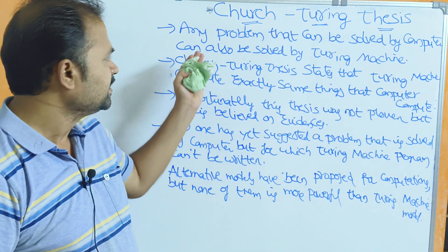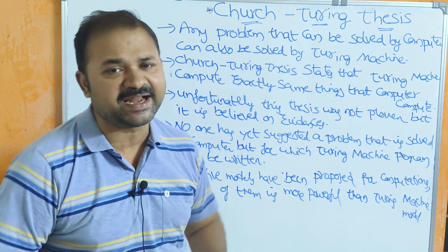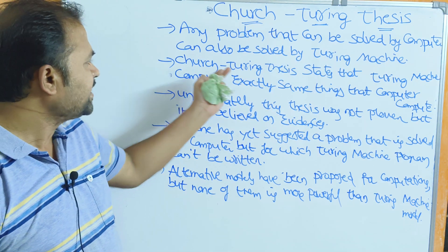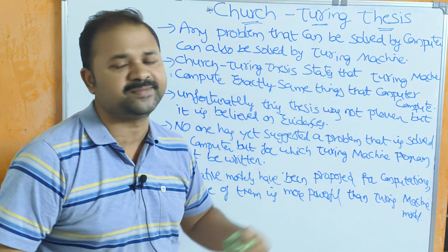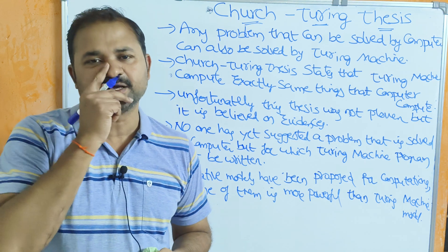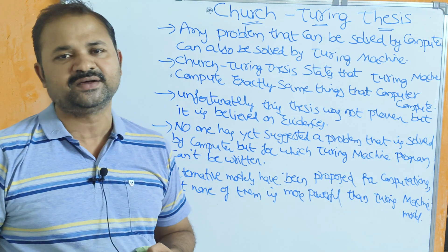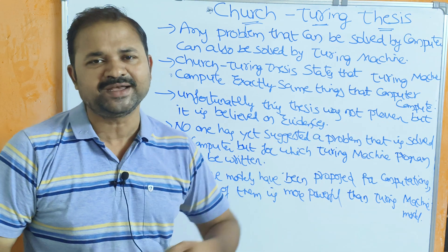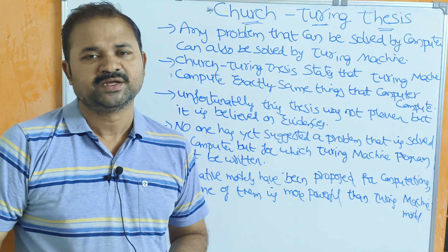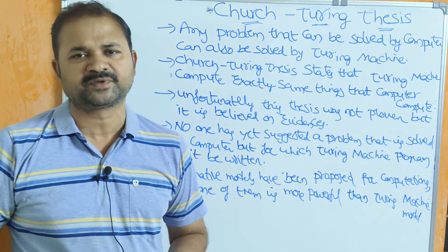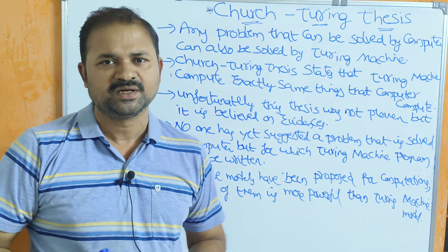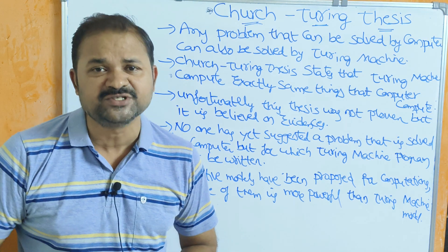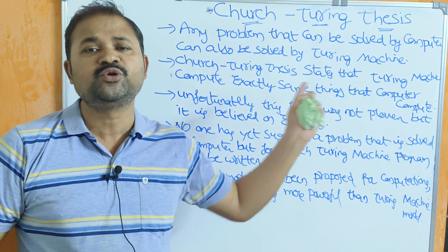The first point: any problem that can be solved by a computer can also be solved by a Turing machine. In this concept we are drawing a comparison between the computer and the Turing machine. If we solve a problem with the help of a computer, then the same problem can be solved using a Turing machine also.